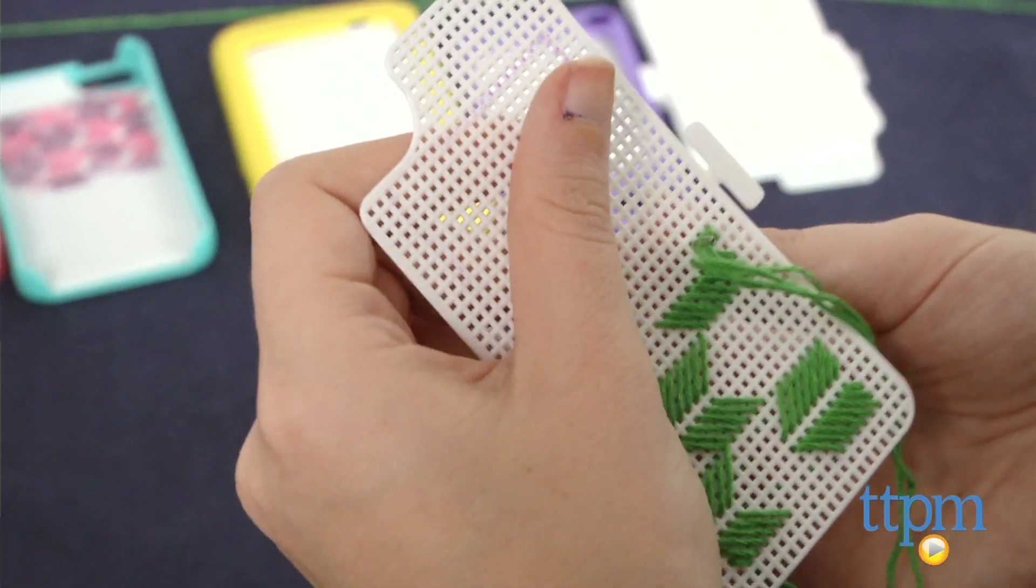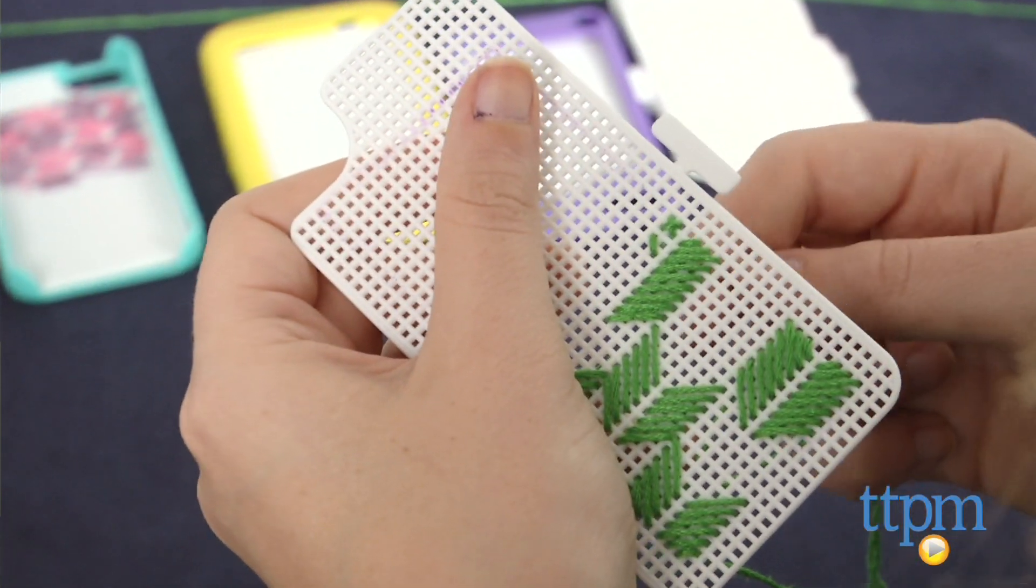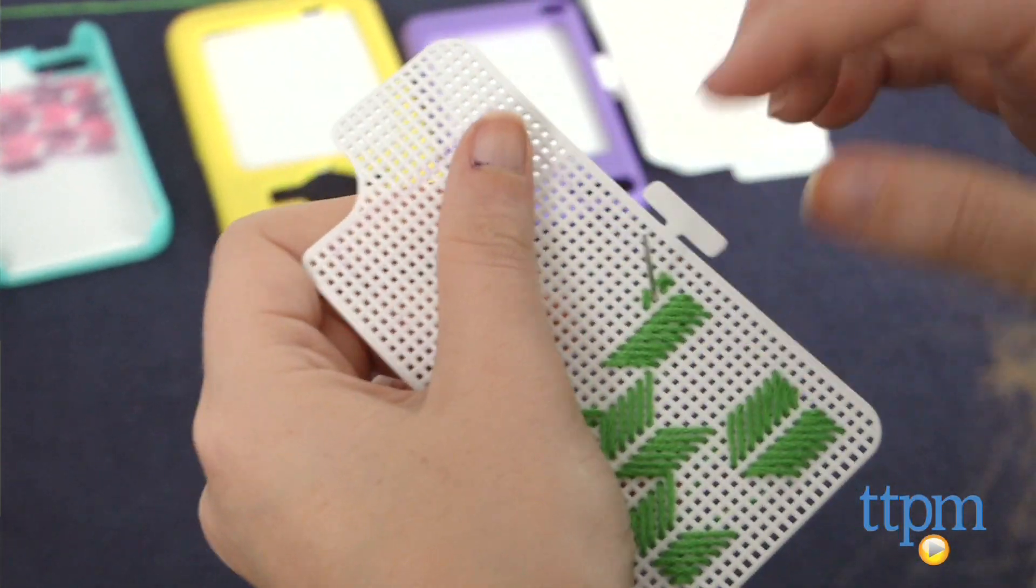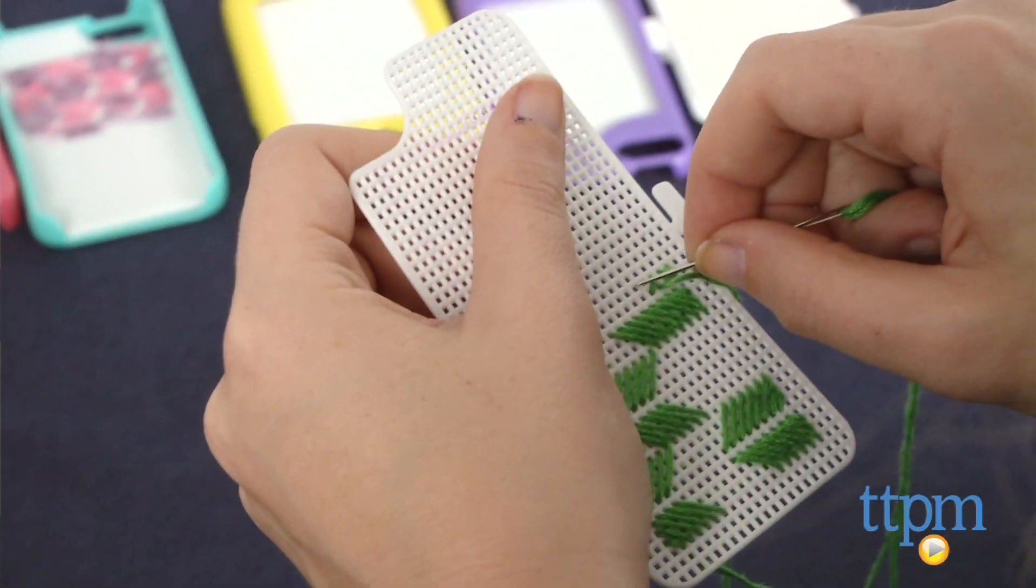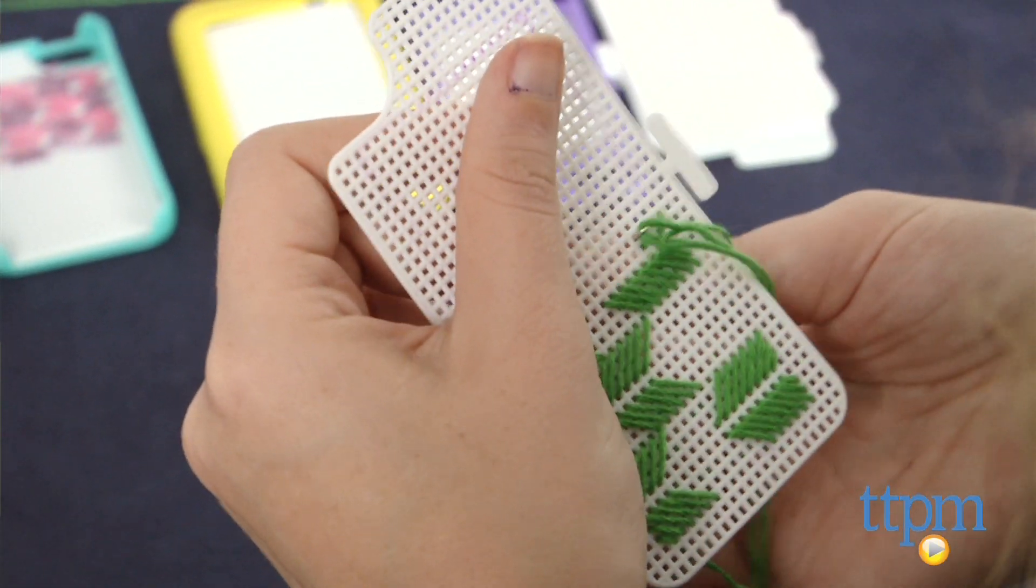We also suggest using the clear nail polish to paint entirely over the last line of stitches. We feel it does a better job of securing it in place. Directions also suggest working right to left as you stitch. However, you can easily work left to right as well.